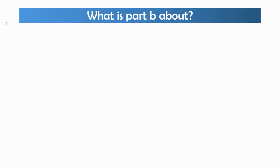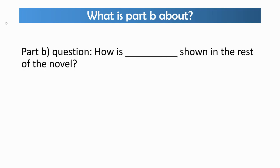So what can you expect in Part B of the Christmas Carol assessment? The question will always be something along the lines of how is something shown in the rest of the novel? That something will be a theme or big idea that runs all the way through the book. For example: how is poverty shown in the rest of the novel? How is family life shown in the rest of the novel? How is Christmas shown in the rest of the novel?